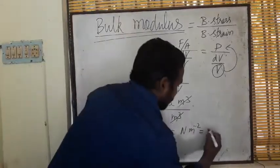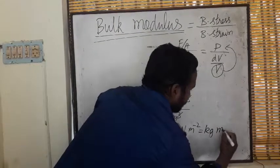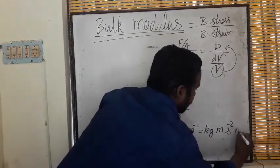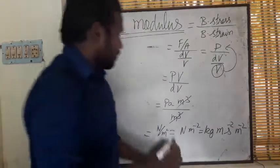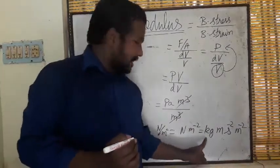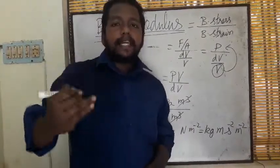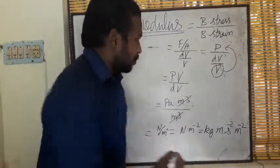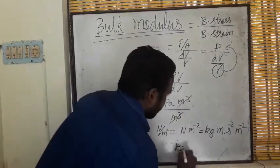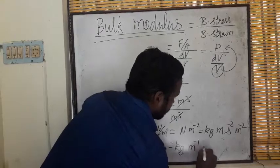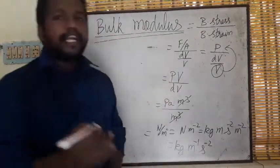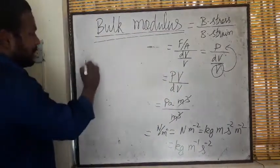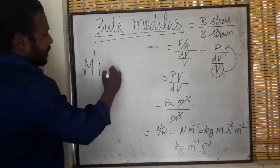Already we know Newton is kg meter second minus two meter minus two. Newton is force: mass times acceleration. Mass is kg, acceleration is meter by second square, so kg meter meter minus one second minus two. So the dimensional formula for bulk modulus is M to the power 1, L to the power minus 1, T to the power minus 2.